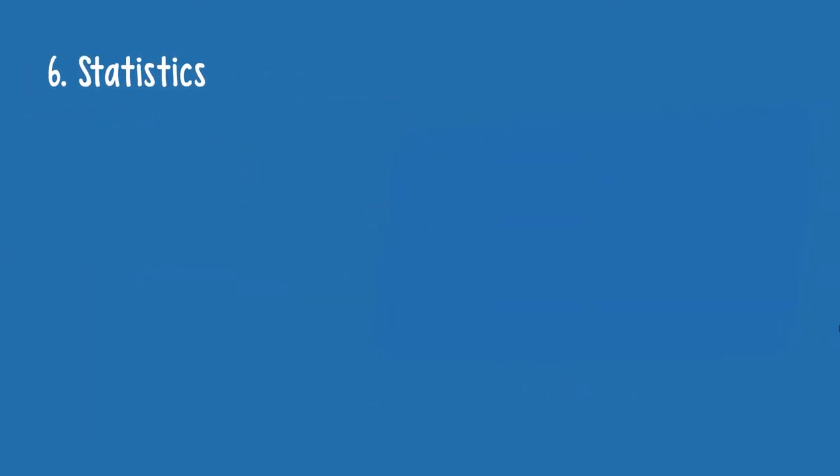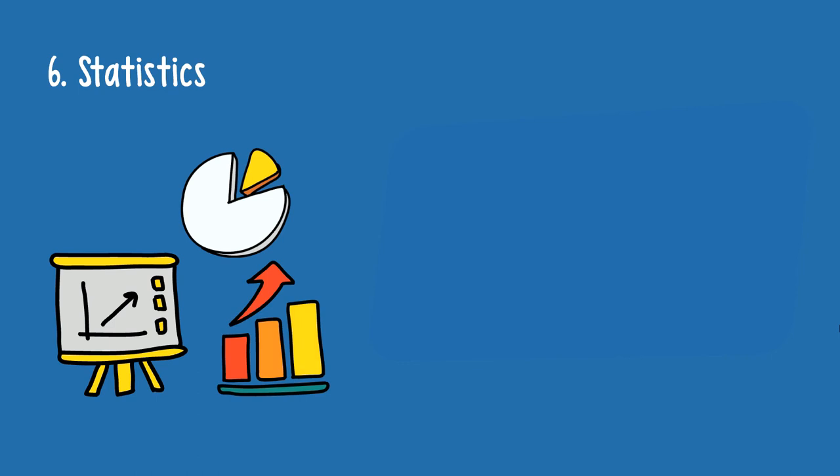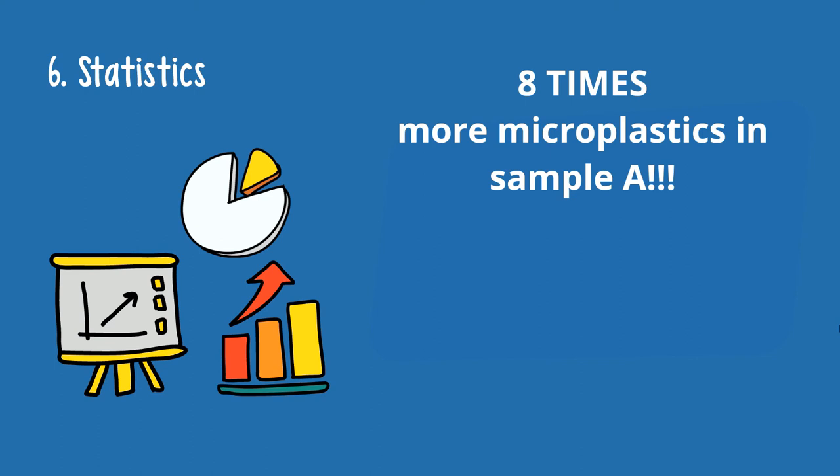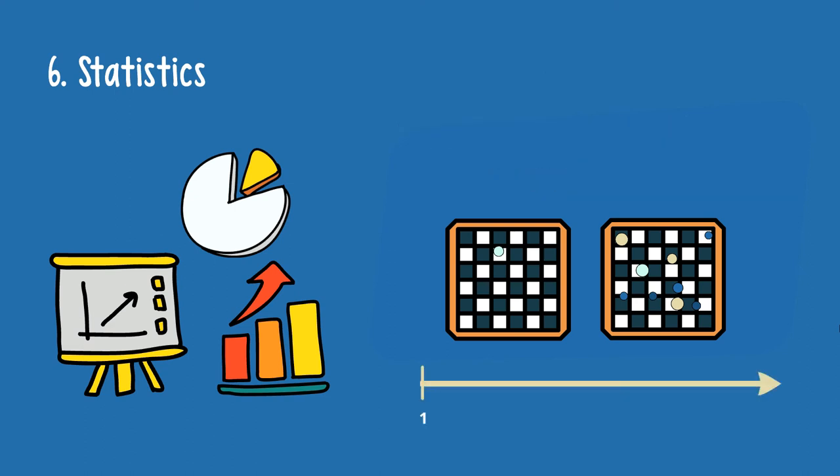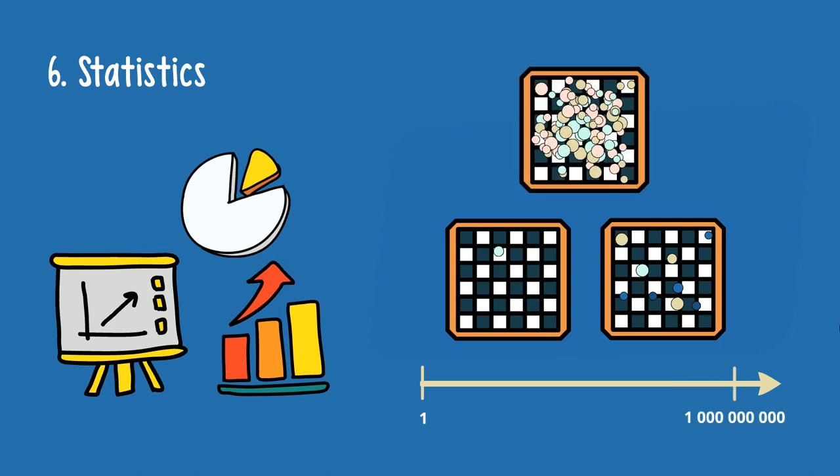Sixth, statistics are a fickle thing, easily misinterpreted. For example, there are 8 times more microplastics in one sample than another, and the difference is statistically significant. Sounds important, right? But what if there is only one particle in the one, and 8 particles in the other sample? So, significant it is, but overall, it's not really relevant. Keep in mind that in the environment, wastewater and drinking water, the number of microplastic particles ranges from 0 to 1 billion per cubic meter. Therefore, a difference of 1 and 8 particles is just not that meaningful.